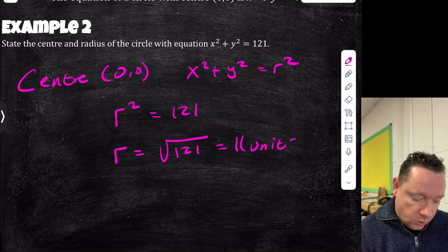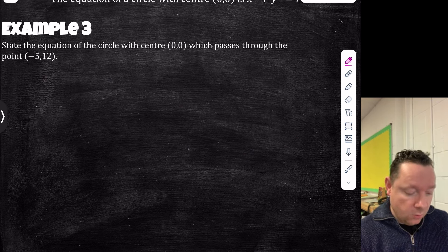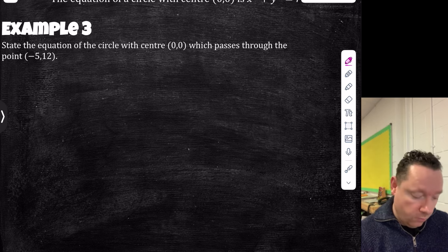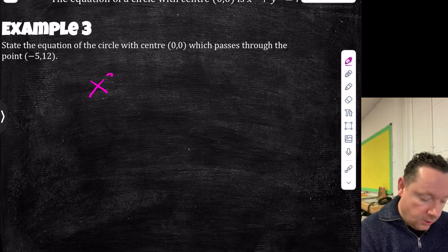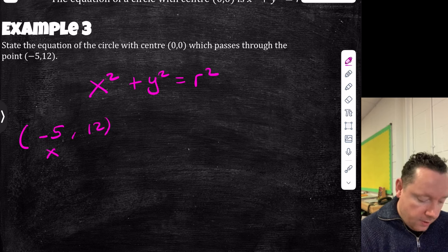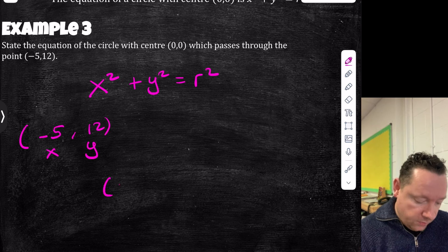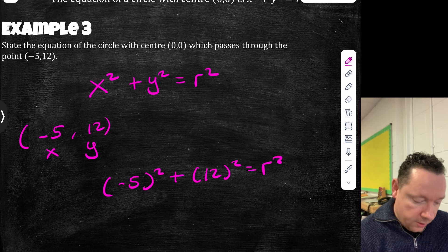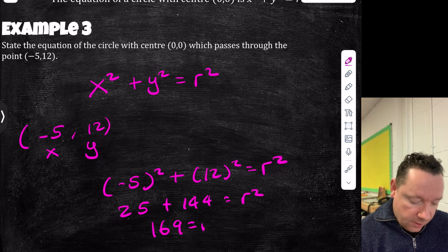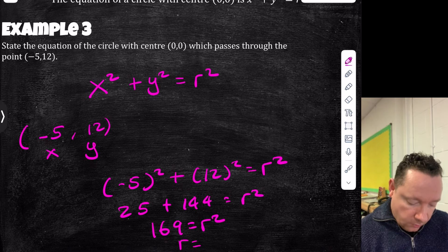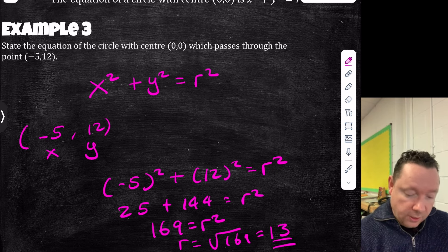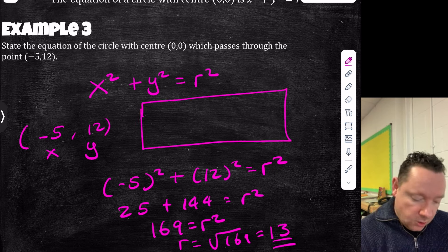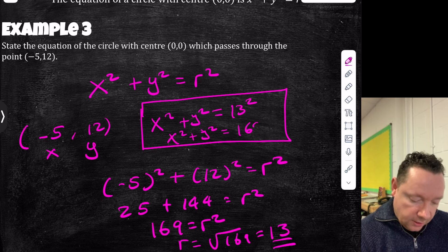Most of the time we won't be told units. Example 3: state the equation of a circle with centre (0,0) that passes through the point (−5, 12). Since the centre is (0,0), x² + y² = r². Substituting the point: (−5)² + 12² = r², giving 25 + 144 = 169. So r = √169 = 13. Therefore the equation is x² + y² = 13², or x² + y² = 169.